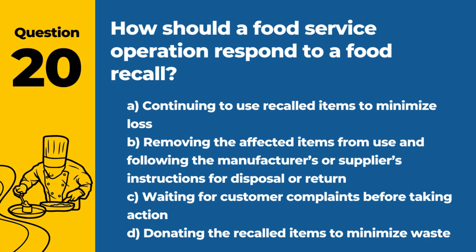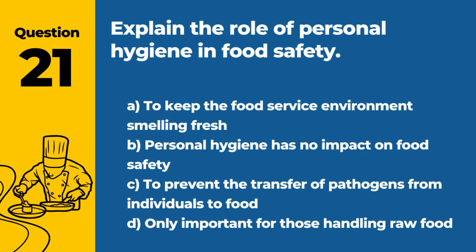Question 20. How should a food service operation respond to a food recall? The answer is B: Removing the affected items from use and following the manufacturer's or supplier's instructions for disposal or return. Prompt action is necessary to protect customers from potentially harmful products.